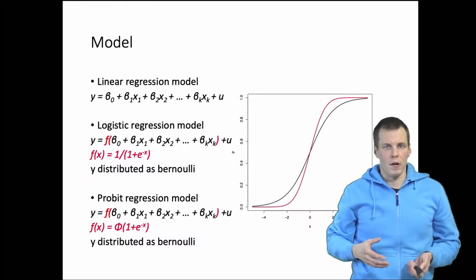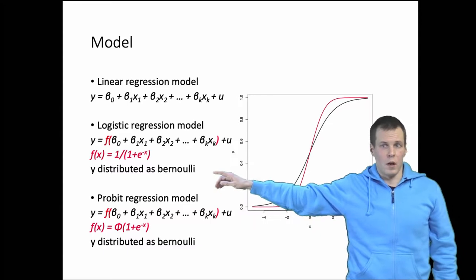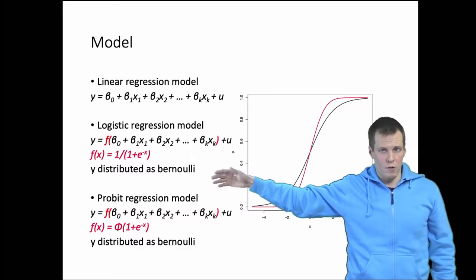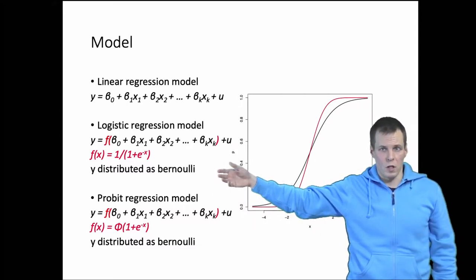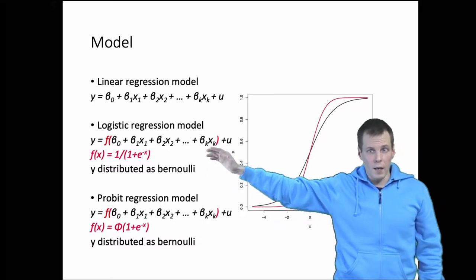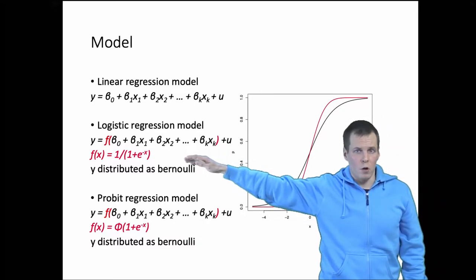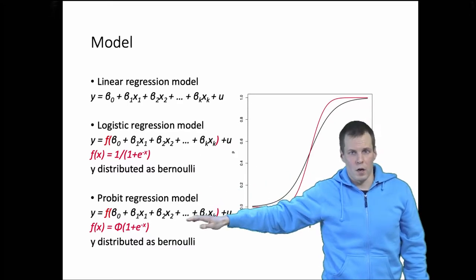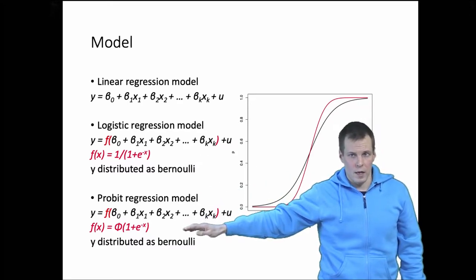They are similar in that both probit and logistic model apply the Bernoulli distribution of 1 or 0 as the distribution for the GLM. Then the link function is different, so in logistic model we use the logistic link and in probit model we use the cumulative standard normal distribution.